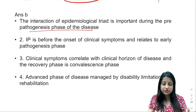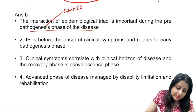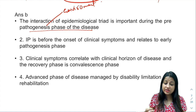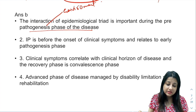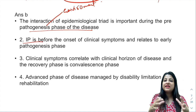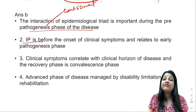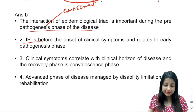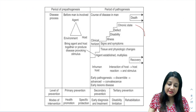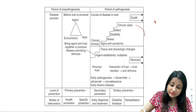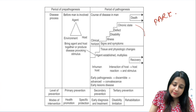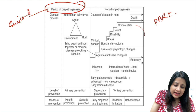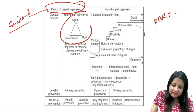Interaction of the epidemiological triad is important during pre-pathogenesis — this is happening in the environment. Once the disease agent enters the body, early pathogenesis starts, which is the subclinical stage, relatively the incubation period when the person has not developed any signs and symptoms. Then clinical symptoms appear — late pathogenesis and advanced state. We are referring to this diagram from our textbook of Park.